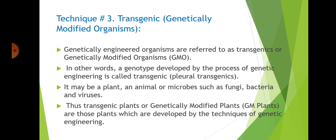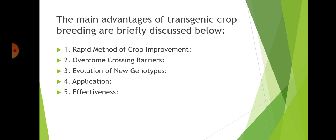Genetically engineered organisms are referred to as transgenics or genetically modified organisms (GMOs). A genotype developed by the process of genetic engineering is called a transgenic — it may be a plant, an animal, or a microbe such as fungi, bacteria, or viruses. Transgenic breeding refers to genetic improvement of crop plants, domestic animals, and useful microorganisms through biotechnology for economic use for mankind.